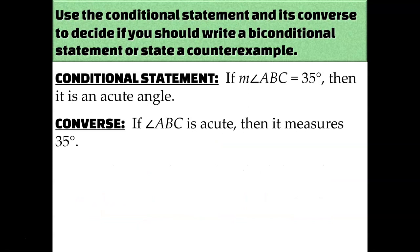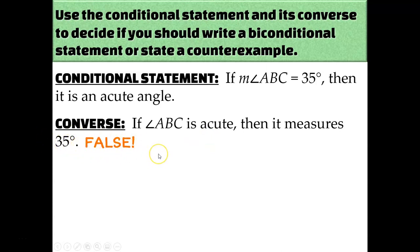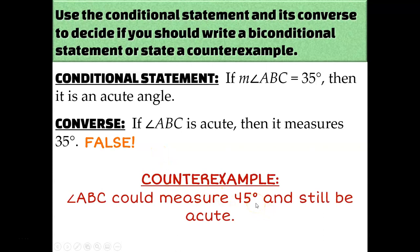Next example. Conditional: if the measure of angle ABC is 35 degrees, then it is an acute angle. That's true — 35 is less than 90. Converse: if angle ABC is acute, then it measures 35 degrees. Could you prove that wrong? Yes — acute just means less than 90 degrees, so any angle less than 90 but not 35 would be a counterexample, such as 45 degrees, 2 degrees, or 89 degrees.